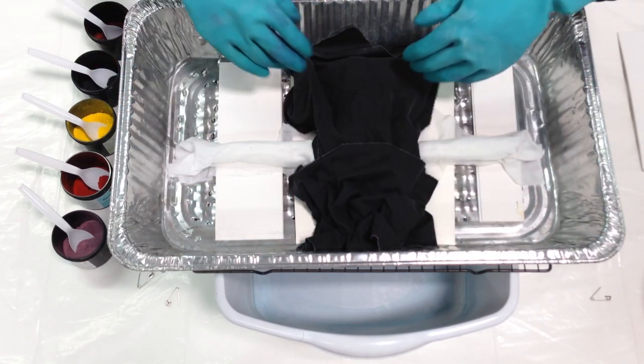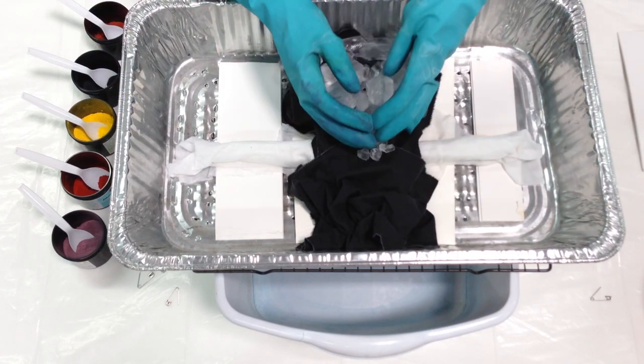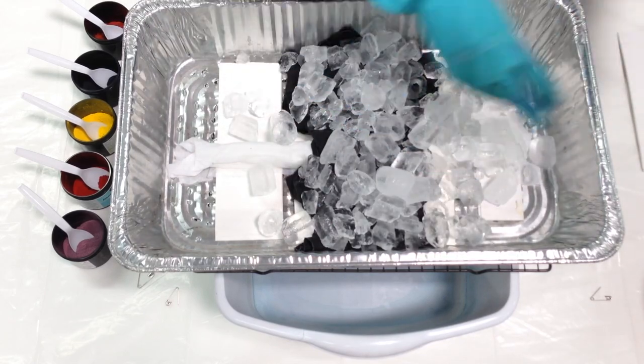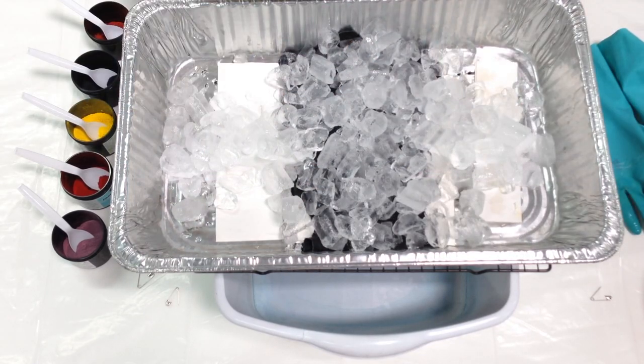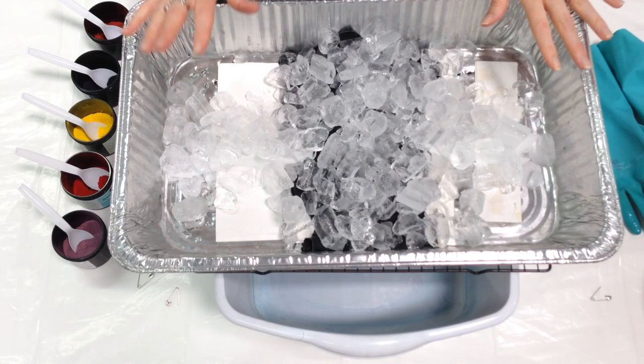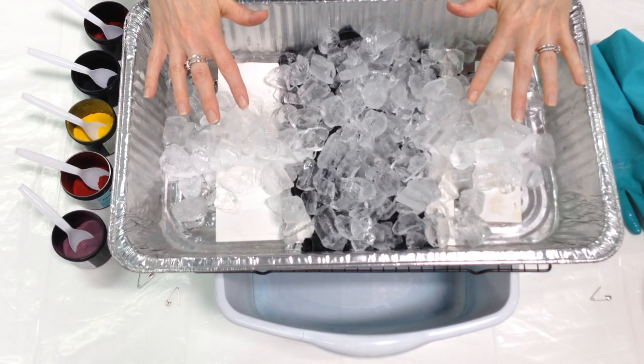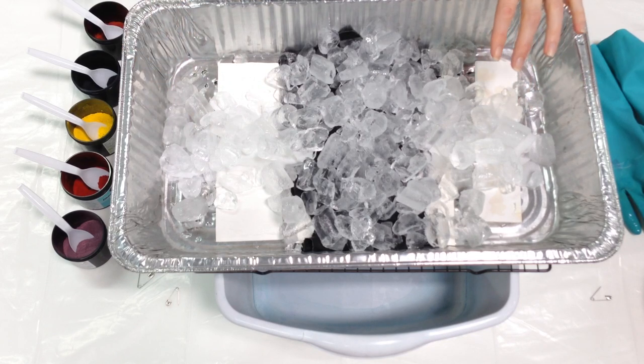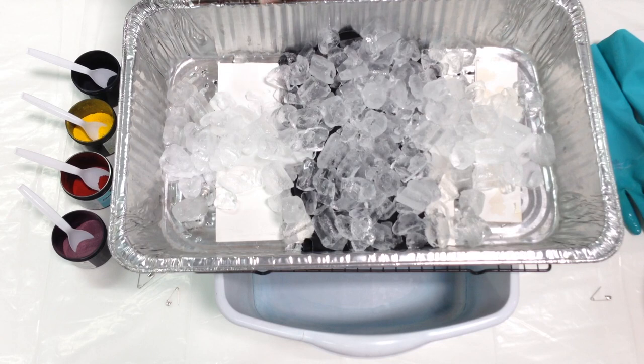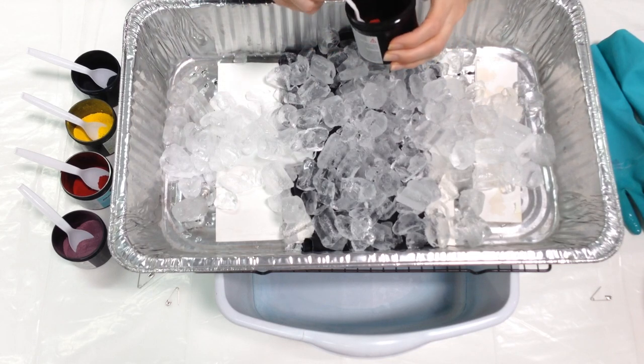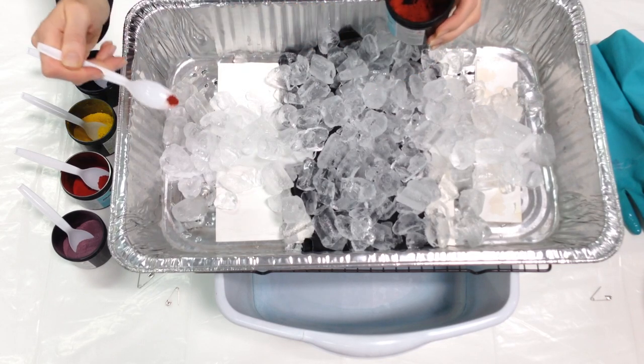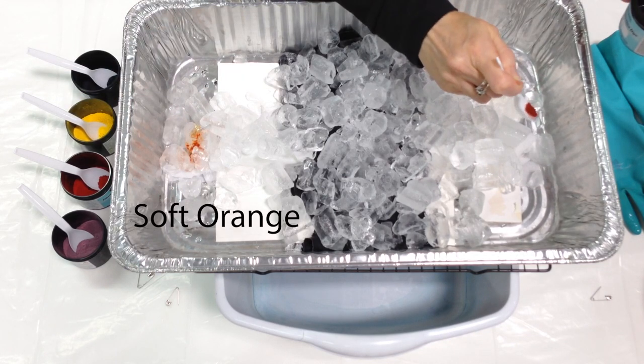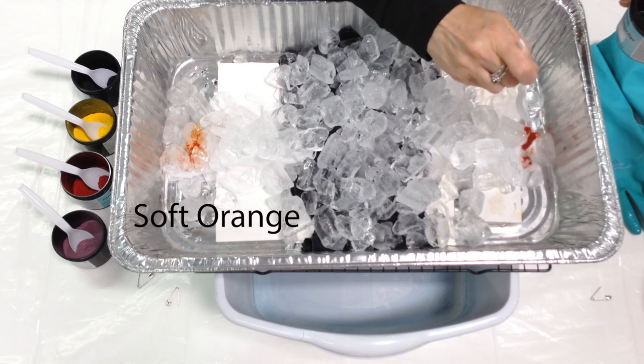Now I'm going to cover it with a layer of ice cubes. I thought it would be fun to make two different colors of blooms, so there's a different flower on the front than on the back. For both blooms at the very tip I'm going to put a little bit of soft orange just to create that center dark area that you often see on a flower.